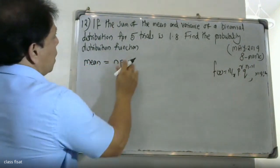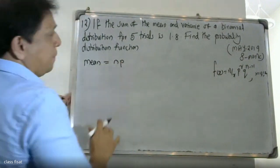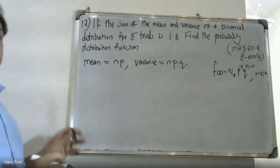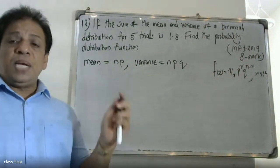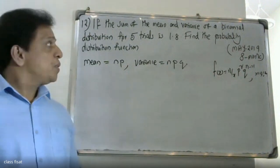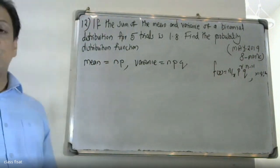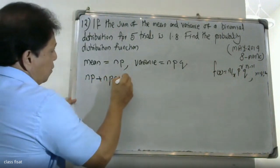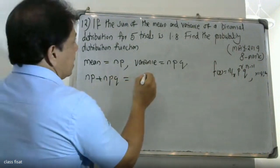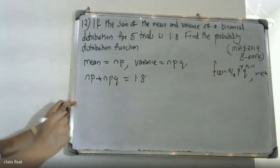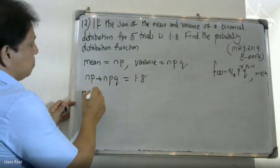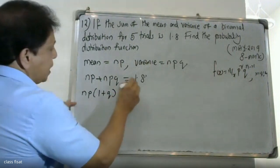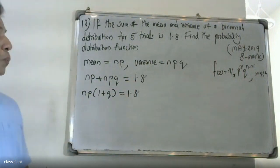The mean of a binomial distribution is equal to np, and the variance is equal to npq. The sum of the mean and variance is np + npq, which equals np(1 + q). We are given that this sum equals 1.8, so np(1 + q) = 1.8.